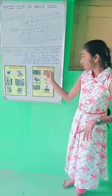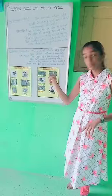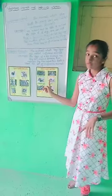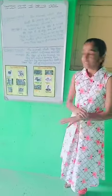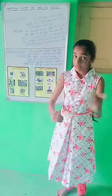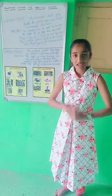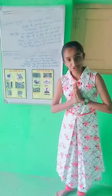And in oviparous animals: butterflies, sparrow, crocodile, fish, frog, and snake. Now you got the difference between viviparous animals and oviparous animals. Thank you so much.